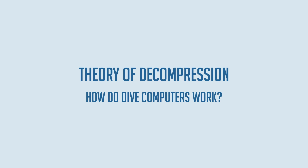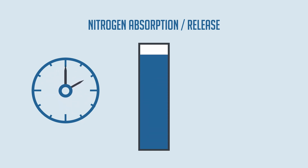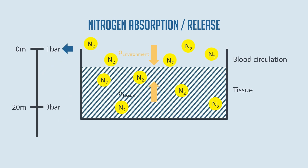Every diver knows that when we dive we absorb nitrogen over time, and when we are on the surface we release it again. But why exactly does this happen and how can we visualize it? Let's take a look at the whole thing using nitrogen. Assuming a pressure of one bar at the surface, the pressure in our body is balanced between our tissues and the blood circulation.